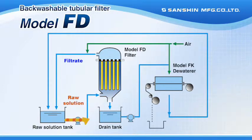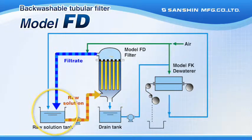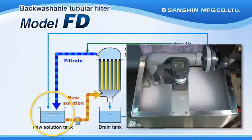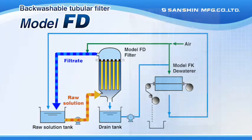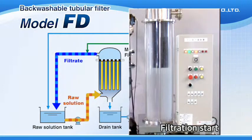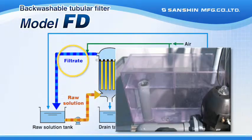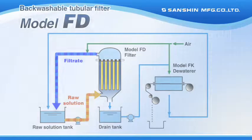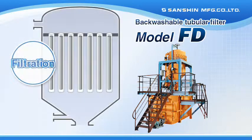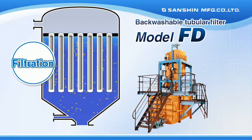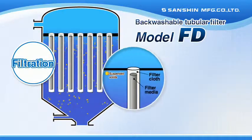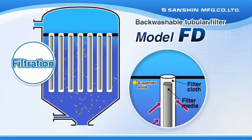Let's begin by taking a look at the filtration processes of the backwashable tubular filter model FD. Model FD filters comprise a raw solution chamber at the bottom of the filter and a filtrate chamber at the top, separated by an intermediate plate. Cylindrical filter media with filter cloth are attached to the intermediate plate for use.